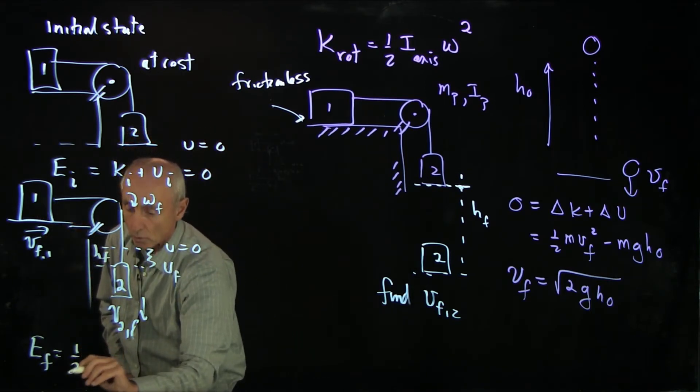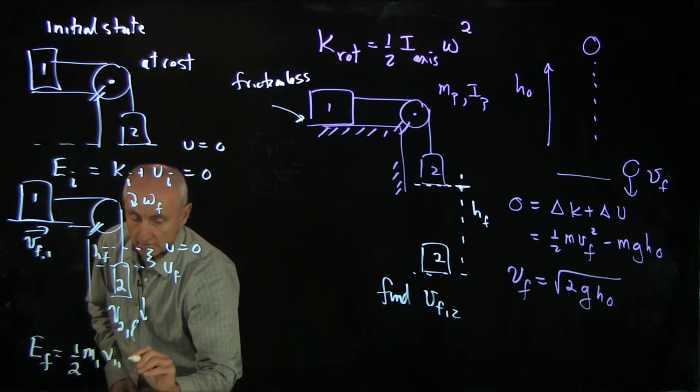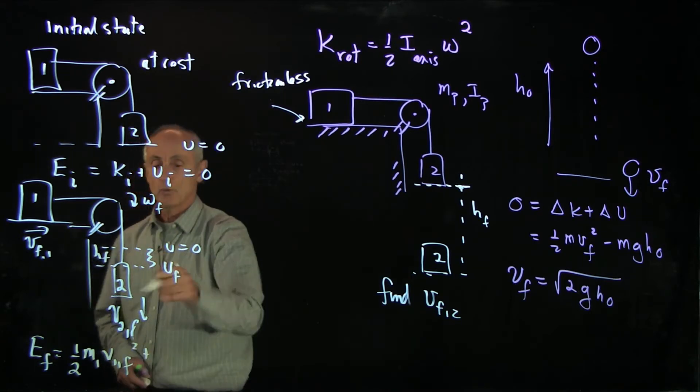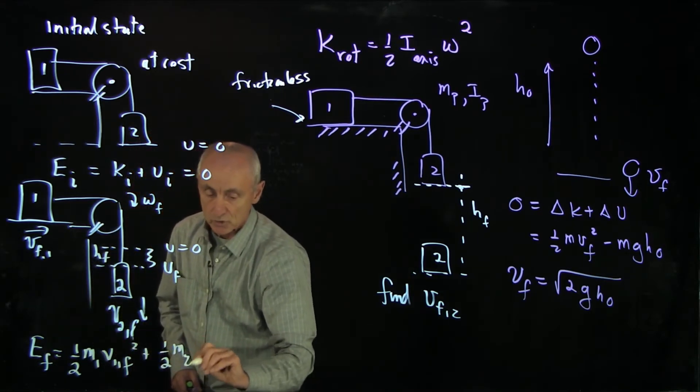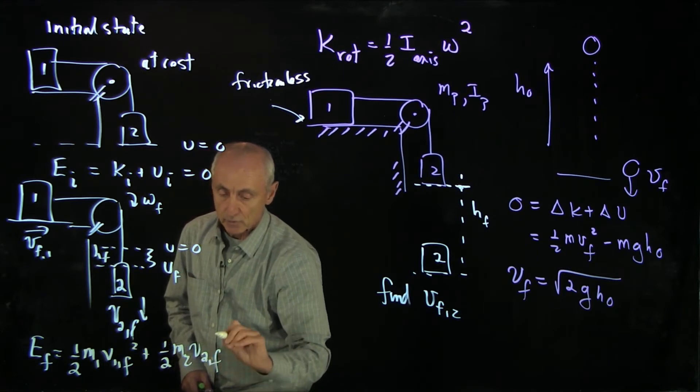We have block 1, 1 half m1 v 1 final squared. We have the motion of block 2, 1 half m2 v 2 final squared.